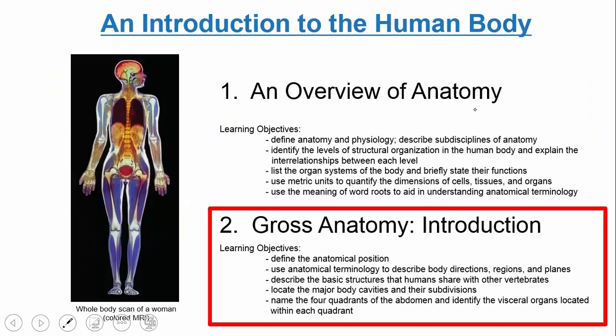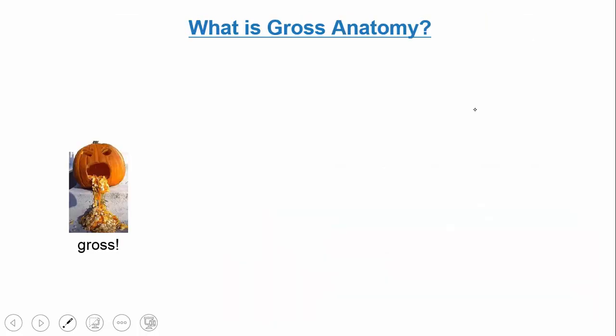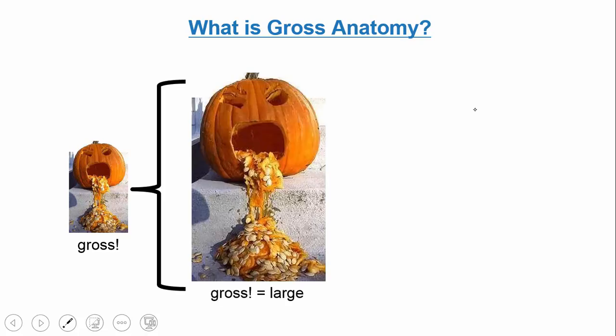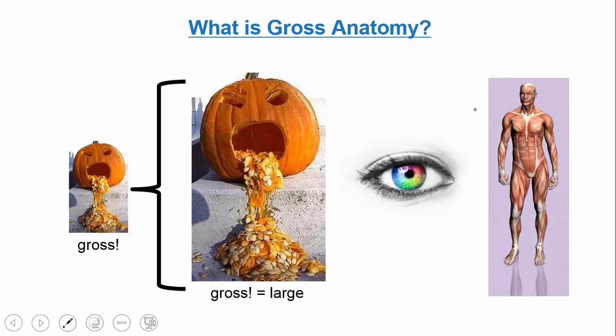Now let's focus on gross anatomy. Gross anatomy — and yes, 'gross' can mean disgusting, but really it means 'large.' Gross anatomy is something you can see with your eye without the aid of an instrument like a microscope. If we need a microscope, that's microscopic anatomy. Naming the different muscles throughout the body, for example, would be gross anatomy — something we can see with our naked eye.